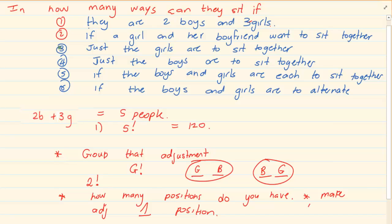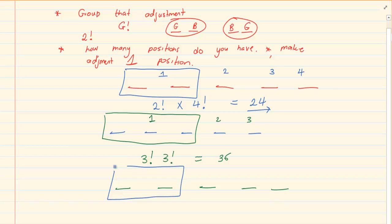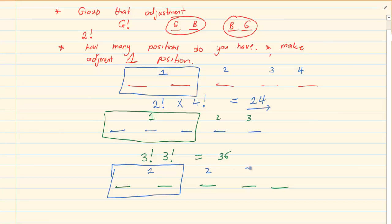The next one says just the boys are to sit together. How many boys do we have? We have two boys. We still have five original positions. We are grouping the two boys, making that one group, giving us four positions total. So we have four factorial. But the adjustment for our group is two factorial. Remember you can use your calculator — it's four factorial times two factorial, which is equal to 48.